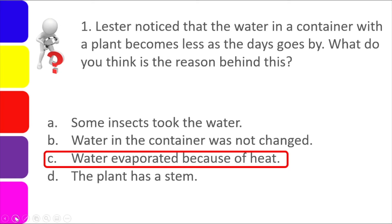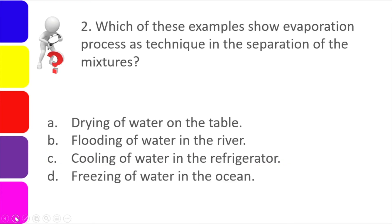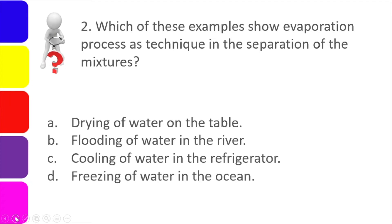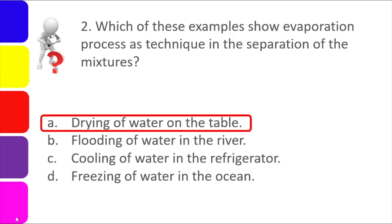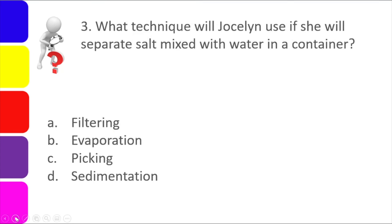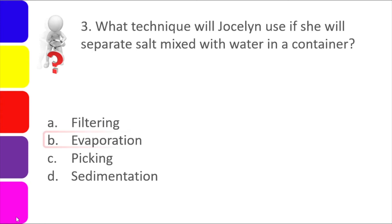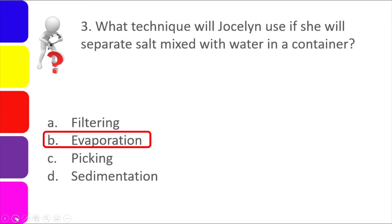For number 2: Which example shows evaporation as a technique in the separation of mixtures? A. Drying of water on the table. B. Flooding of water in the river. C. Cooling of water in the refrigerator. D. Freezing of water in the ocean. The correct answer is letter A, because of the clue 'drying.' For number 3: What technique will Jocelyn use to separate salt mixed with water? A. Filtering, B. Evaporation, C. Picking, D. Sedimentation. The answer is letter B, Evaporation — heating the mixture so the liquid evaporates and the solid residue (salt) remains.